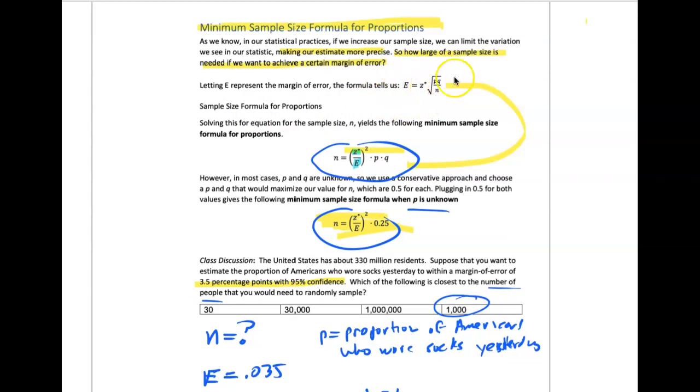We have our original formula for margin of error here. You don't need to know the math, but the math gets completed and you get this equation, which involves the other values: your critical Z, your margin of error which you specified ahead of time, and then your P and Q.